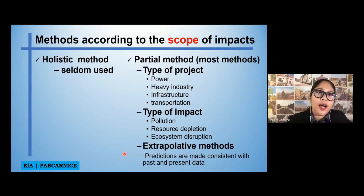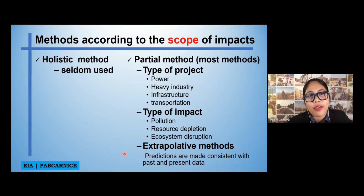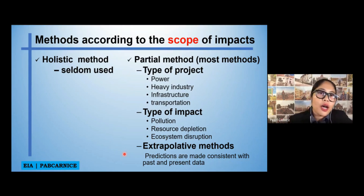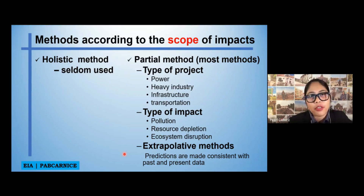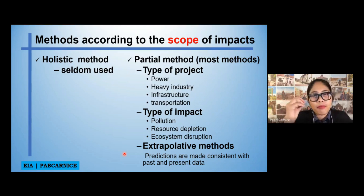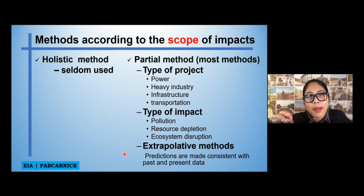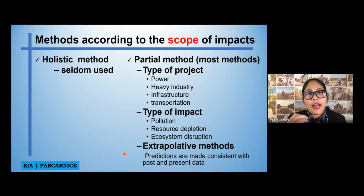When we say type of project, it may be power, heavy industry, infrastructure, or transportation. When we say type of impact, does it focus on pollution? Or does it focus on resource depletion? Or does it focus on ecosystem disruption? We can specifically focus on a particular type of impact when we assess the scope of impacts of a certain project or activity.